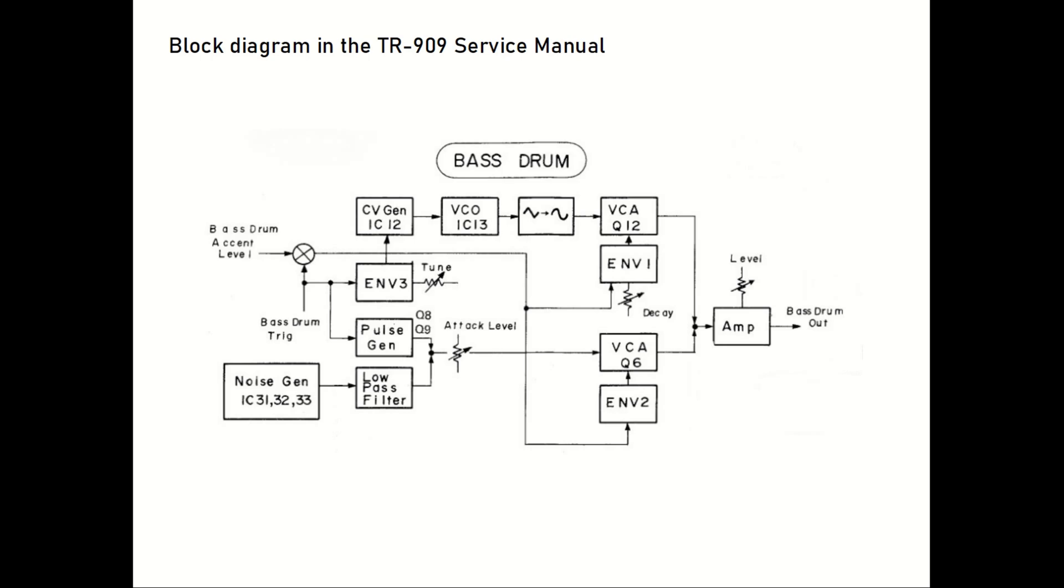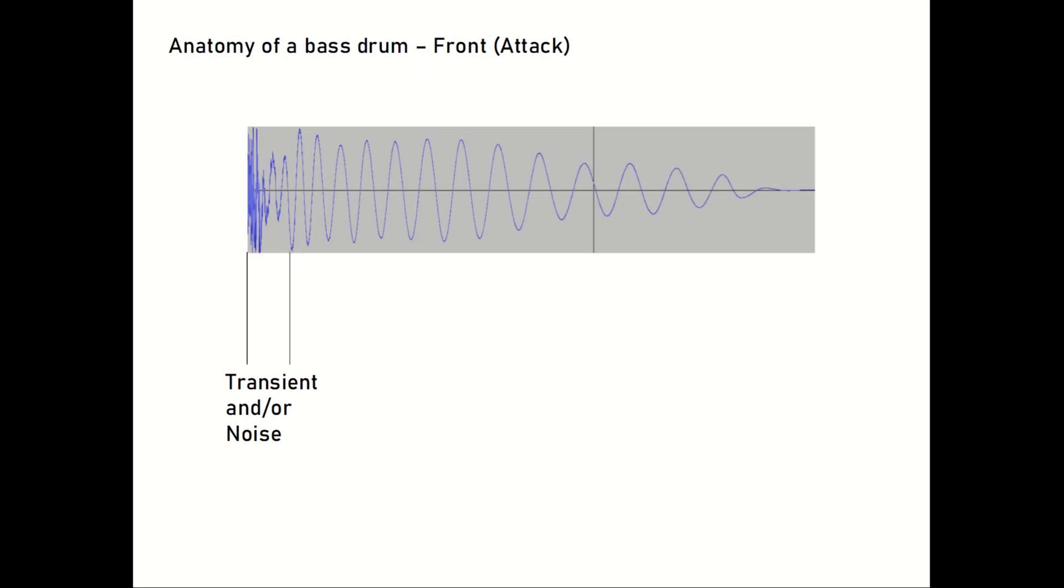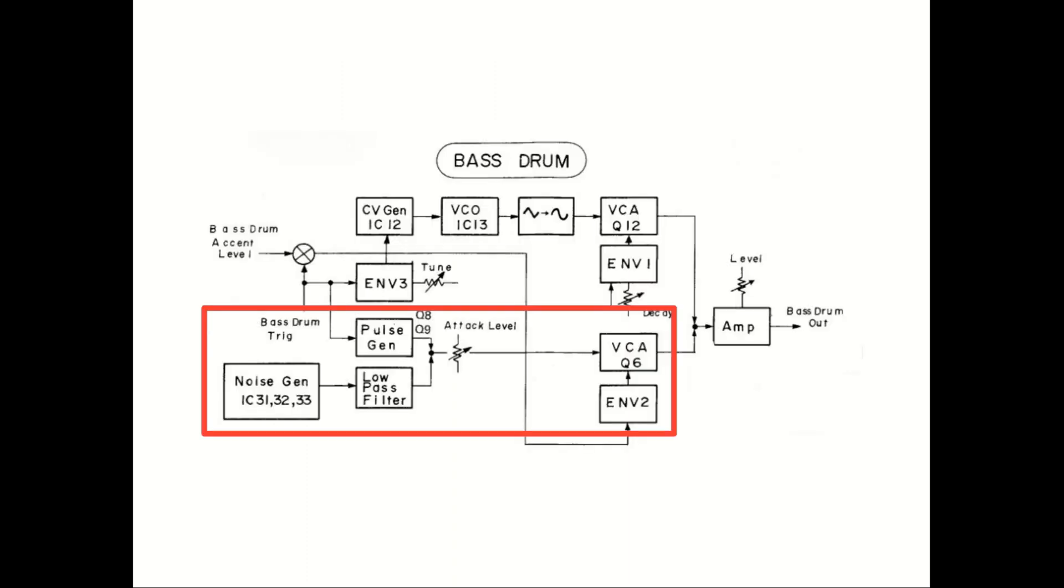Before we continue, I think it's a good idea to talk a little about the anatomy of a bass drum sound. It basically consists of three parts. The click or front that defines the attack of the kick. The front is built up by high frequencies, transients, noise, or a combination of those. This is implemented in the lower part of the block diagram, controlled by envelope generator 2 and the attack knob on the front panel.